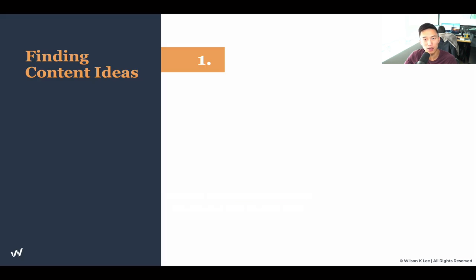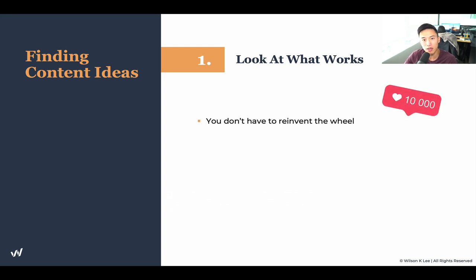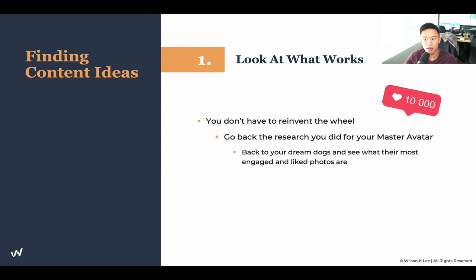Finding content ideas — number one way is to look at what has worked. You don't have to reinvent the wheel. Look at your research, your master avatar, and go back to your dream dogs to see what their most engaged and liked posts are. Dream dogs are companies — or people — that you aspire to become, that you want your company to mimic.